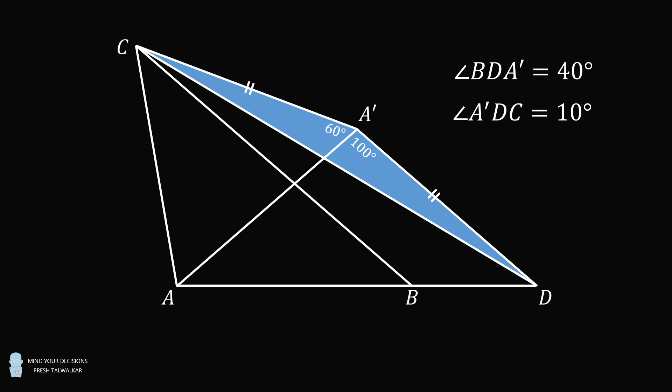In particular, angle A'DC is equal to 10 degrees. We can then subtract the measure of angle A'DC from the measure of angle BDA' to get that angle BDC is equal to 40 minus 10, which is equal to 30 degrees. And that's the answer.